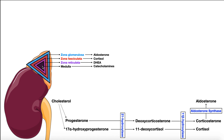Outside of the medulla, we have the cortex. The adrenal cortex has three sub-layers. The outer one in blue here is called the zona glomerulosa, mainly responsible for synthesizing the hormone aldosterone. The middle one in red here is the zona fasciculata, responsible for the synthesis of cortisol. And then the purple one, the deepest of the cortex, is the zona reticulata, responsible for the synthesis of androgens like DHEA.